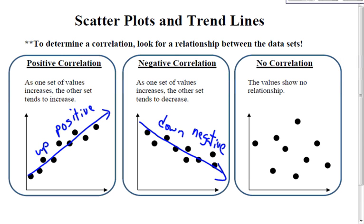For no correlation, the values show no relationship. So it's very difficult to draw a trend line. As a matter of fact, you can't draw a trend line because there is no trend. When the values show no relationship, that means the dots are all over the place.